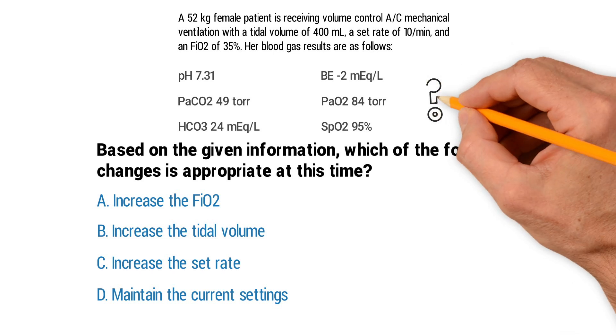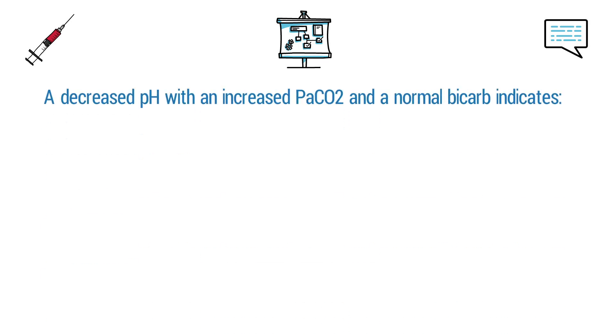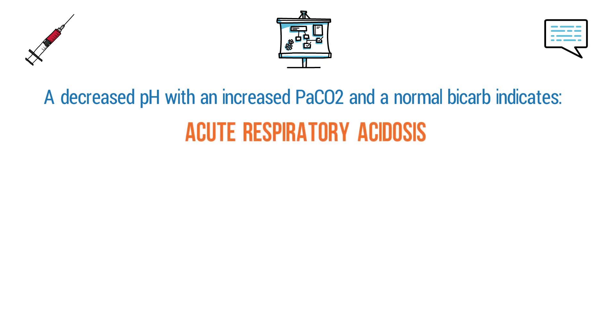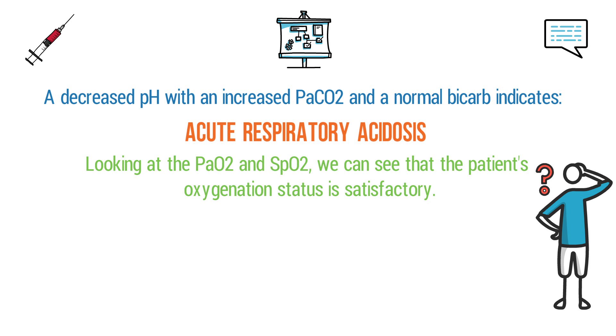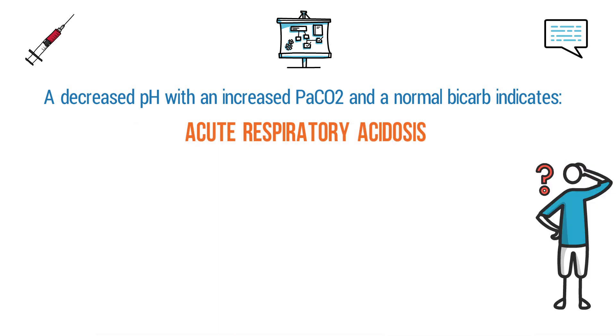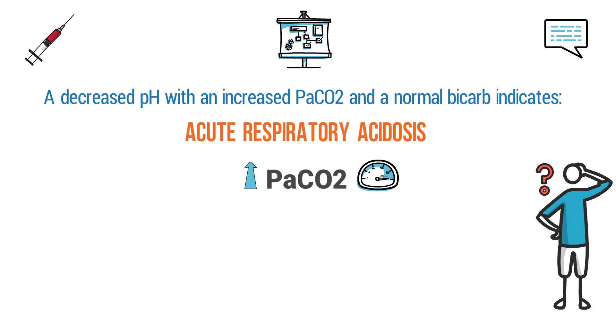The answer choices are: A) increase the FiO2, B) increase the tidal volume, C) increase the set rate, or D) maintain the current settings. To come up with the correct answer, the first thing we need to do is interpret the ABG results. A decreased pH with an increased PaCO2 and a normal bicarb indicates acute respiratory acidosis. Looking at the PaO2 and SpO2, the patient's oxygenation status is satisfactory.